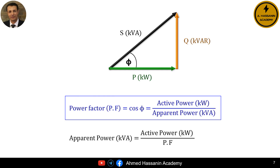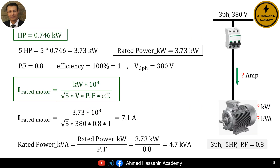Using the power triangle, we know that the power factor, or cosine of phi, equals the active power in kilowatts divided by the apparent power in kilovolt amperes. Therefore, the apparent power in KVA equals the active power in KW divided by the power factor. To calculate the apparent power of the motor: the apparent power in KVA equals 3.73 kilowatts divided by 0.8. Therefore, the apparent power of the motor equals approximately 4.66 kilovolt amperes, or about 4.7 KVA.